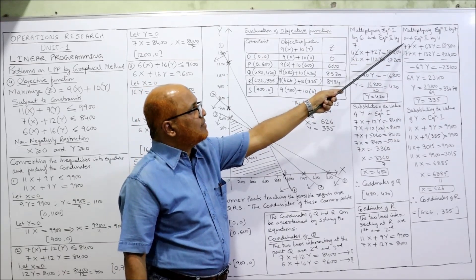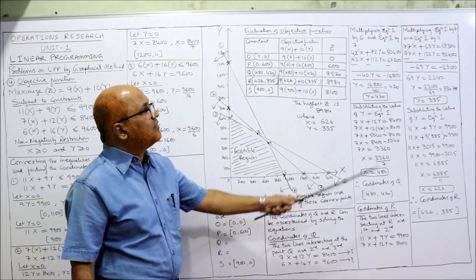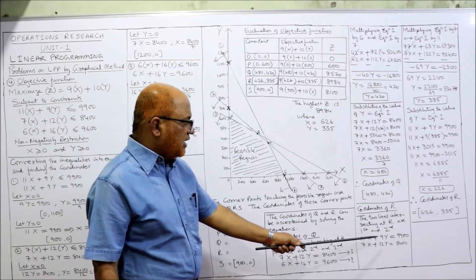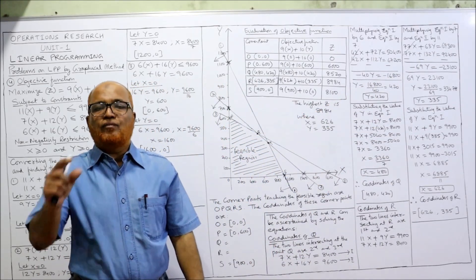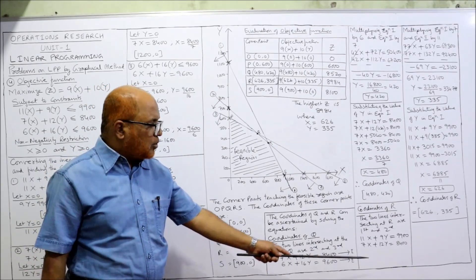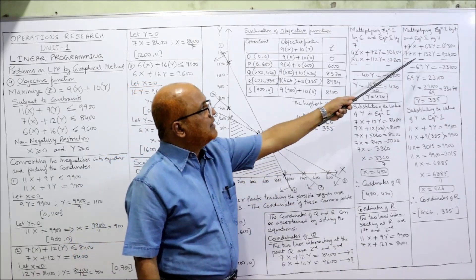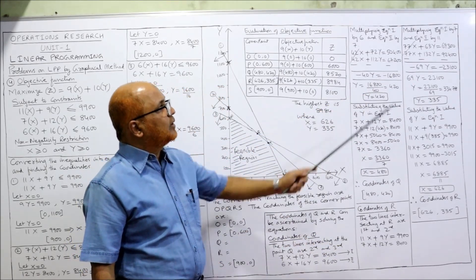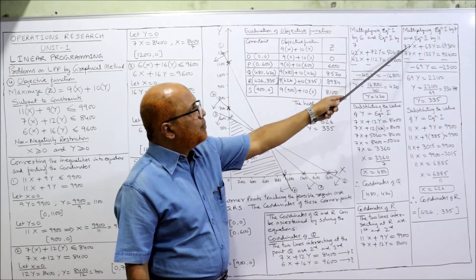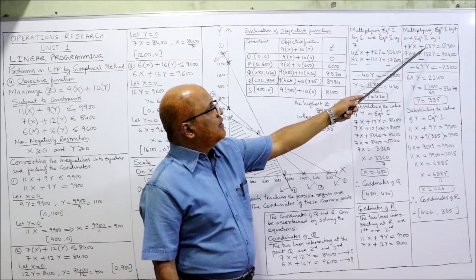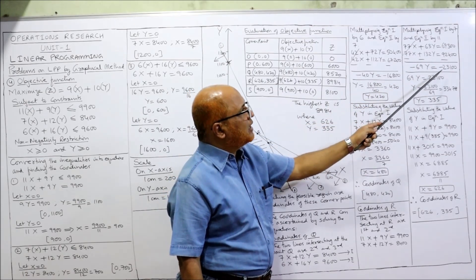Multiplying equation 1 by 7: 77x + 63y = 69300. Multiplying equation 2 by 11: 77x + 132y = 92400. Changing the sign and subtracting: 77x cancels. 63y minus 132y gives minus 69y. 69300 minus 92400 gives minus 23100. The negatives cancel on both sides, so 69y = 23100.